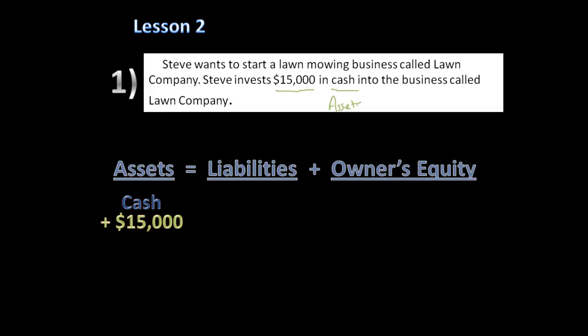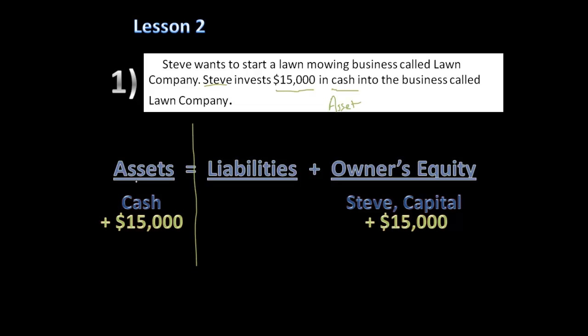The company is now worth $15,000 because assets are worth $15,000. Steve is the one who invested, so he gets a capital account under owner's equity — Steve Capital — and it is increased by $15,000. Assets are on the left side and liabilities plus owner's equity are on the right side.